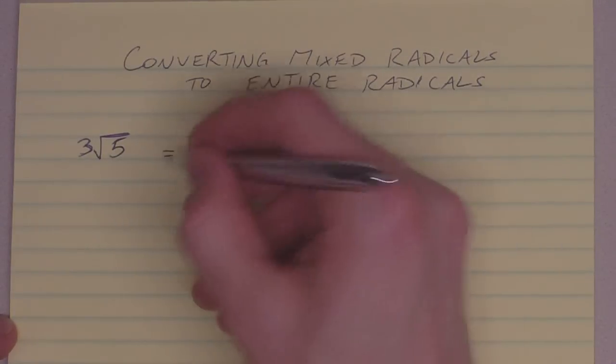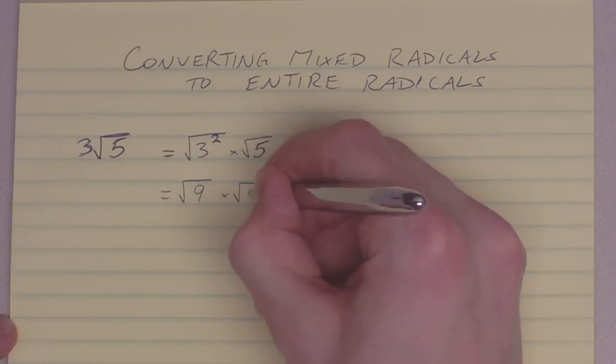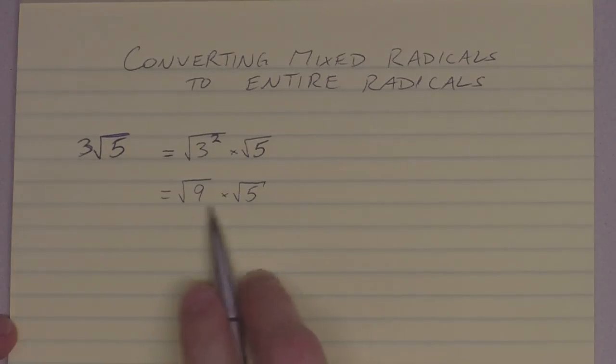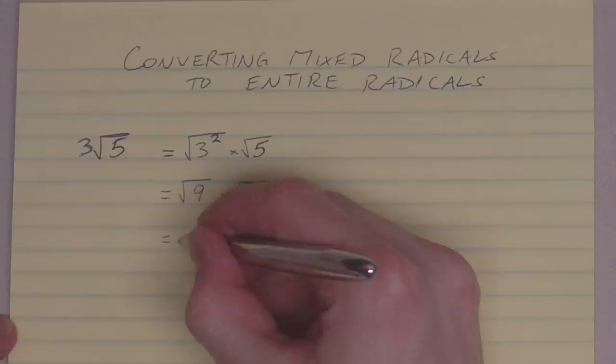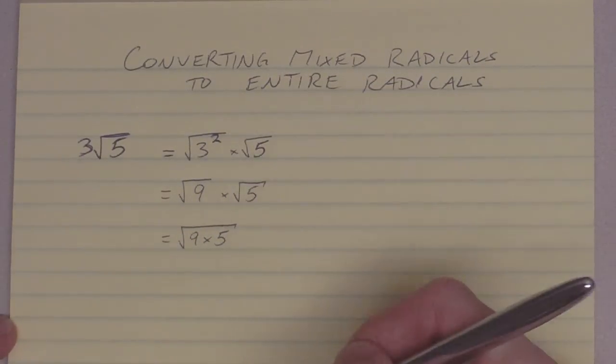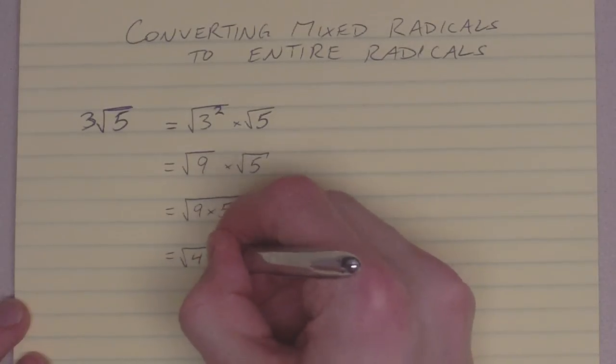Next step, I'm going to work out that 3 squared as being 9. So, now I've got the square root of 9 times the square root of 5. Now, I can combine those both under one radical, 9 times 5. And lastly, I can work out what 9 times 5 is, square root of 45.